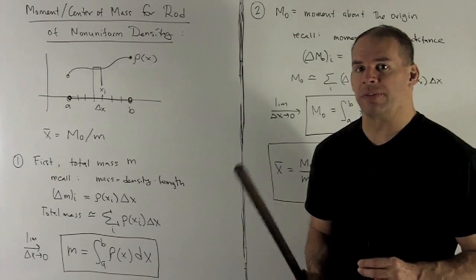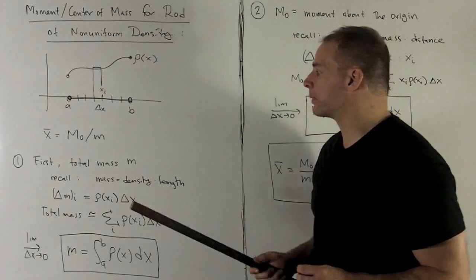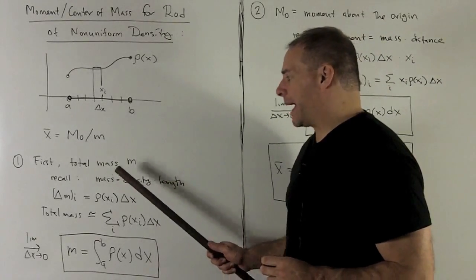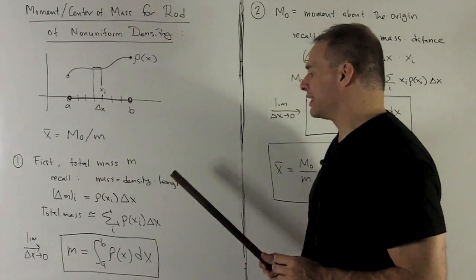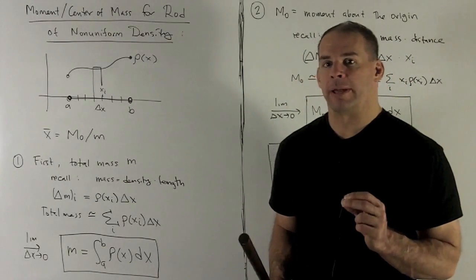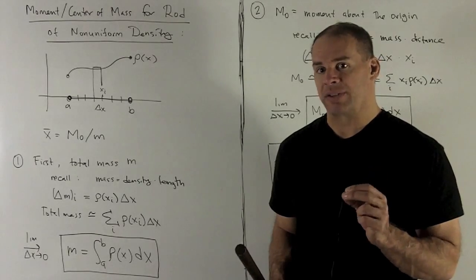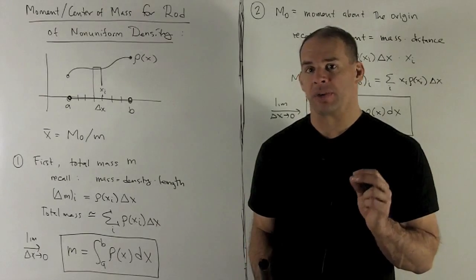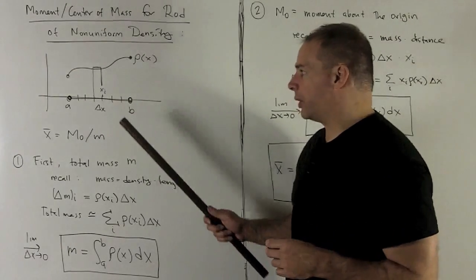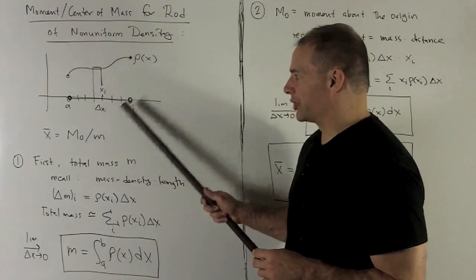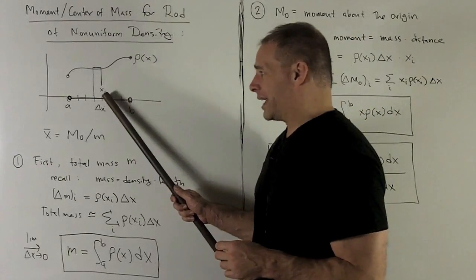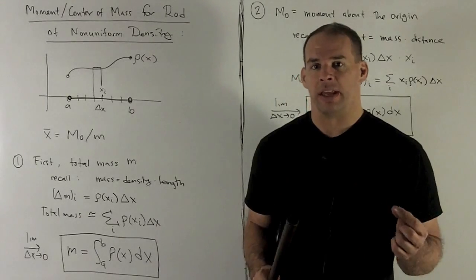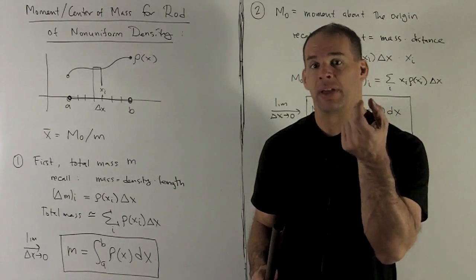First we'll go for the easier of the two — the total mass. In a situation where I have uniform density, the formula is mass equals density times length. We're going to make use of that formula and approximate to get the mass of the entire rod by applying our limit process for integration. I'm going to chop my rod into a bunch of little segments, estimate the mass for each, add them up, and take the limit as the segment's length goes down to zero.